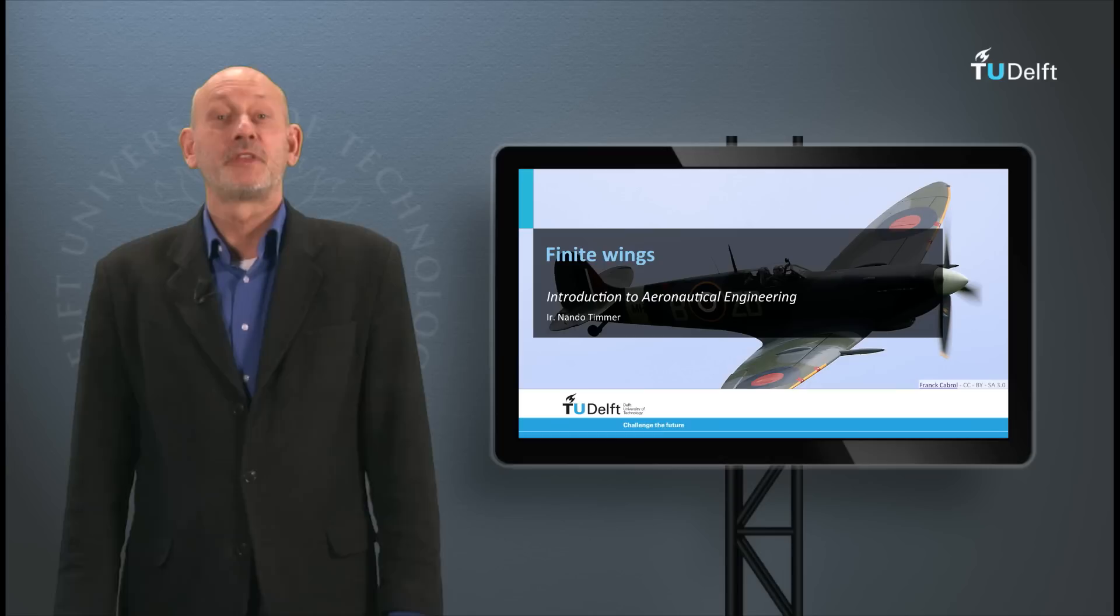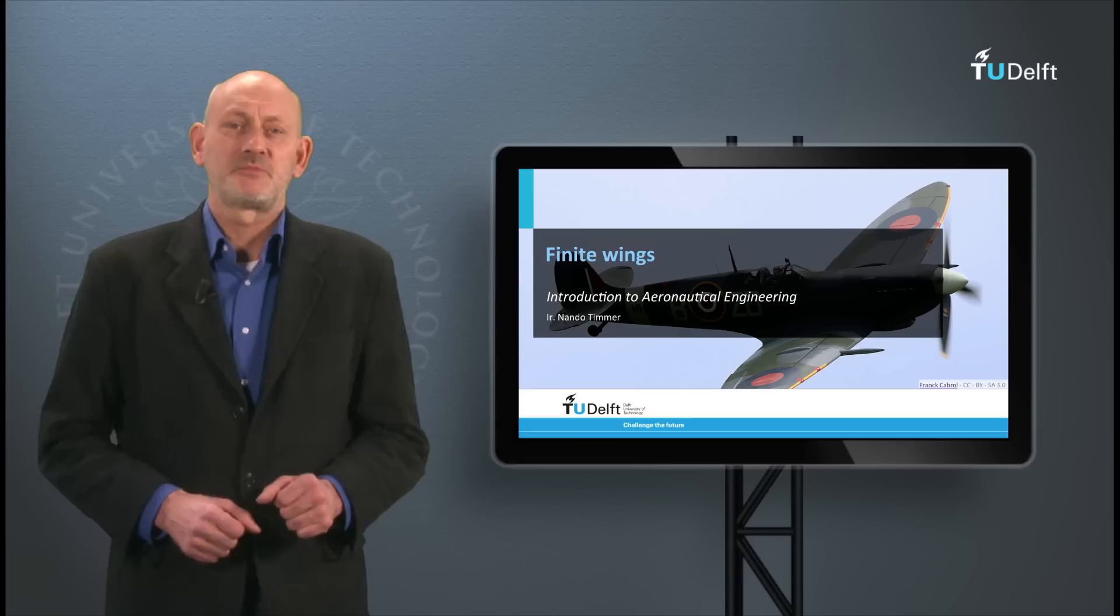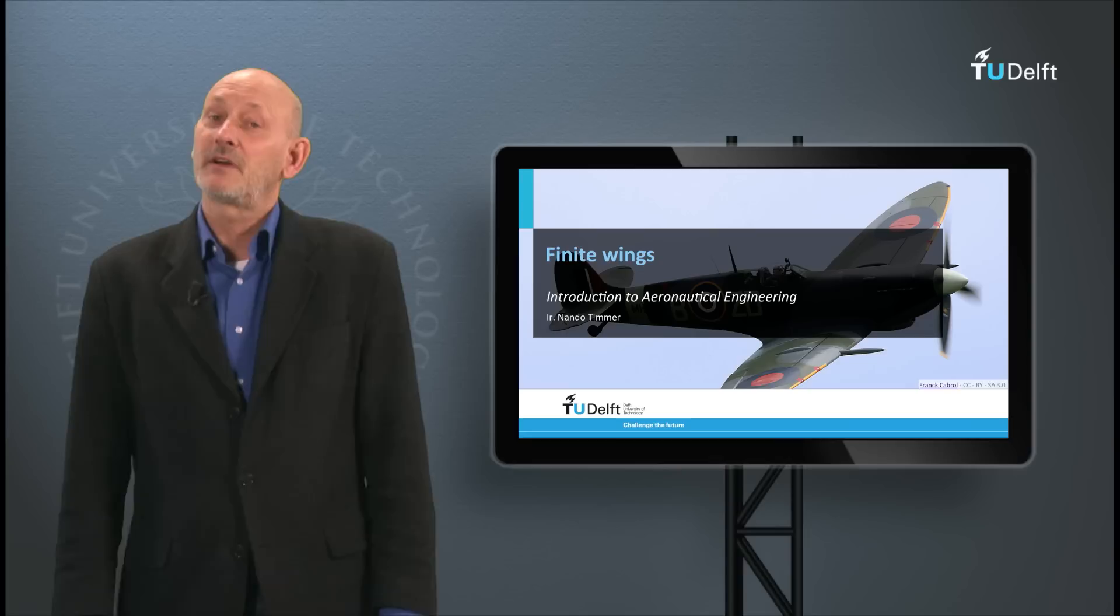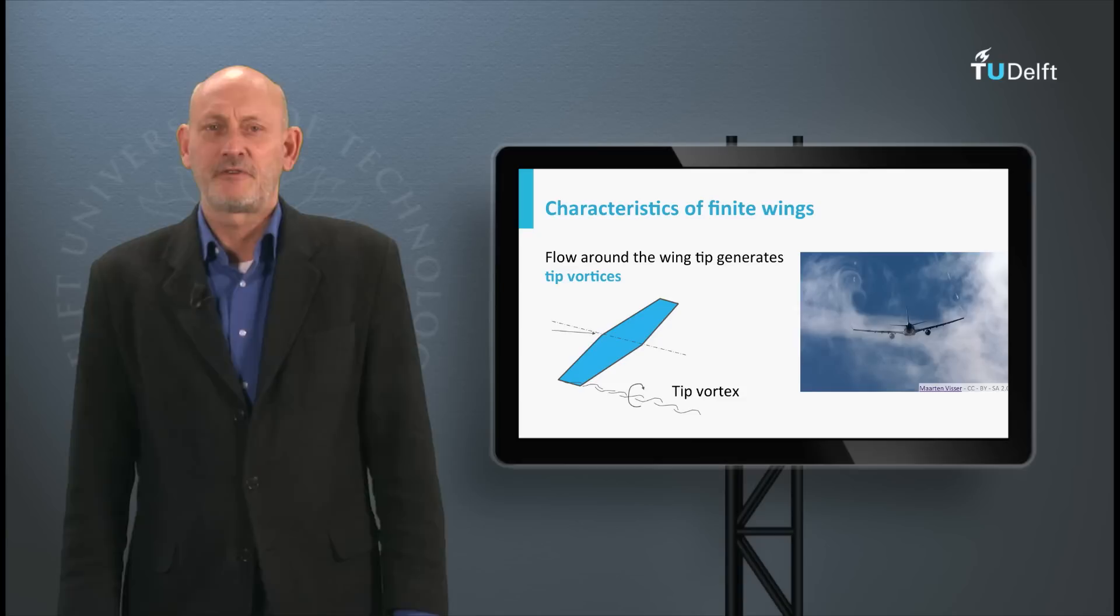Hello, this lecture is about finite wings, or the impact of what happens at the wingtips on the entire flowfield around the wing. Up to now we have looked at two-dimensional objects, so in the case of airfoils, constant-chord infinitely long wings. However, a wing of an aircraft is finite.